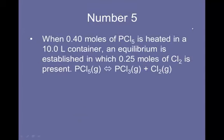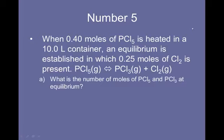Number 5. When 0.4 moles of PCL5 is heated in a 10 liter container, an equilibrium is established in which 0.25 moles of CL2 is present. There's the equation. What is the number of moles of PCL5 and PCL3 at equilibrium? This is one of those ICE equations because they're talking about information in the beginning, although it doesn't say in the beginning. But it says an equilibrium is established in which 0.25 moles of CL2 is present. So that means after some time has passed.